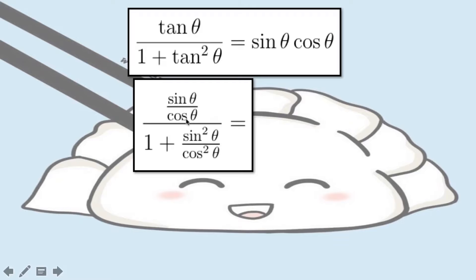Now, since there's a complex fraction situation, let us multiply the numerator and the denominator by the factor cosine squared theta.